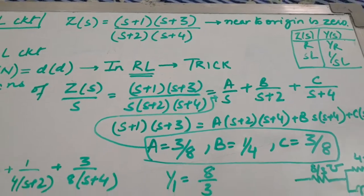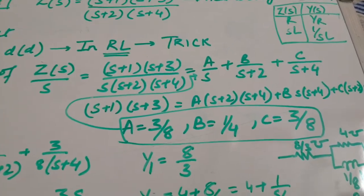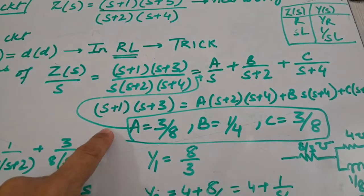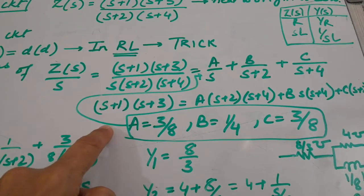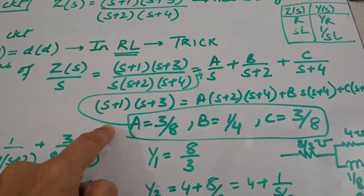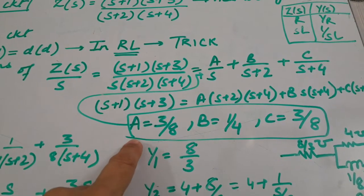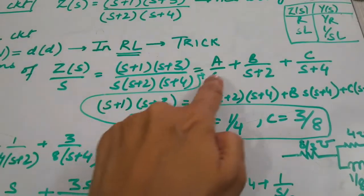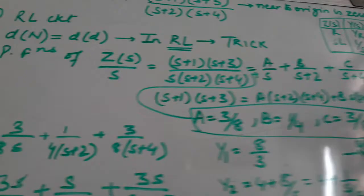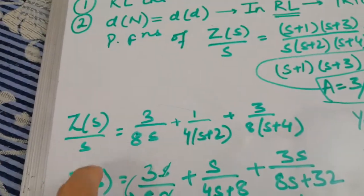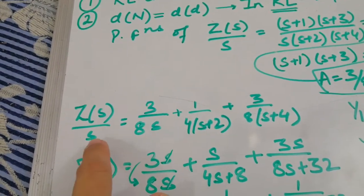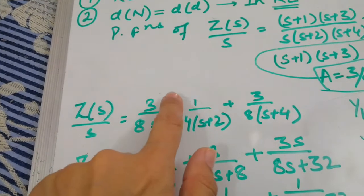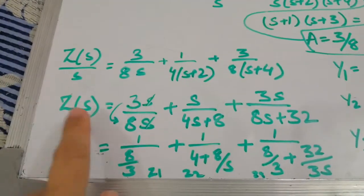By taking Z(s)/s, the transfer function becomes this and now we will be taking a upon s, b upon s plus 2, and c upon s plus 4. We have to calculate the values of a, b, and c by comparing the coefficients of s², s, and the constants. We are getting the values of a as 3/8, b as 1/4, and c as 3/8, which we put into our equation and get Z(s)/s as this result. Now we have to take this s that was in the denominator to the other side to get the partial fractions of Z(s).